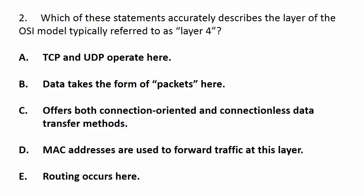With question two, which of these five statements — choose all that apply — accurately describes the layer of the OSI model typically referred to as layer four? The choices are: A) that TCP and UDP operate here; B) that data takes the form of packets here; C) that this layer offers both connection-oriented and connectionless data transfer methods; D) that MAC addresses are used to forward traffic at this layer; and E) that routing occurs at this layer.